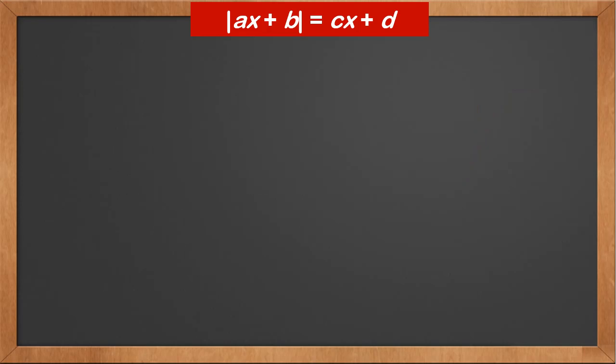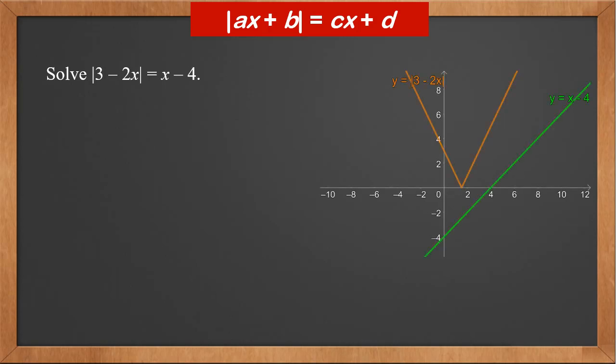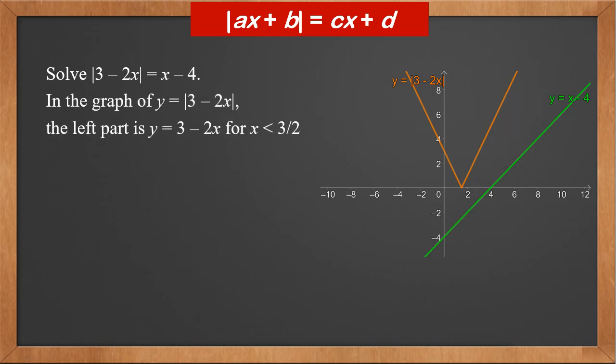For the second type, there could also be no solutions. For example, solve the modulus of three minus two x equals x minus four. First we sketch the graph of both sides. Y equals the modulus of three minus two x is a v-shape touching the x-axis at three over two. The left part is three minus two x for x less than three over two. Therefore, we solve three minus two x equals x minus four. The solution is x equals seven over three. It is greater than three over two, so it's not a valid solution.